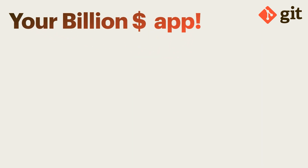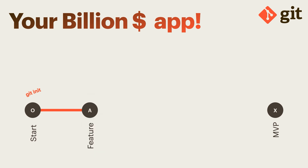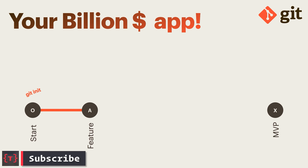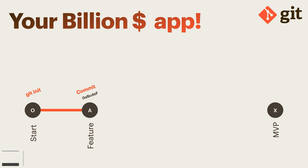Now let's see how Git relates to this analogy. Suppose you have a billion-dollar app idea and want to start a project. You start at zero and want to reach an MVP — a minimum viable product. Using Git, you initialize an empty repository at checkpoint zero. As you add features, you make commits. So you add feature A and make your first commit, then add feature B and commit again.